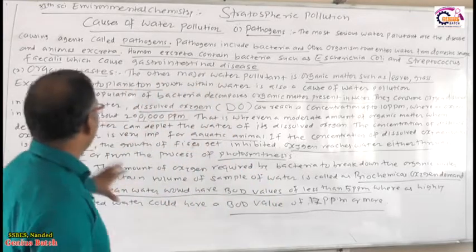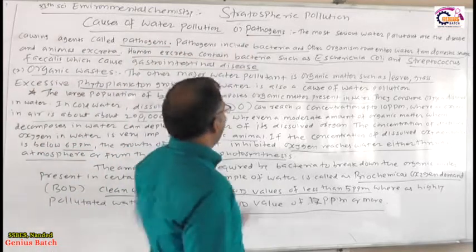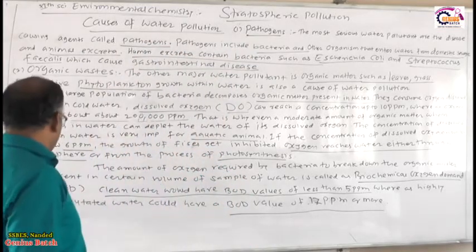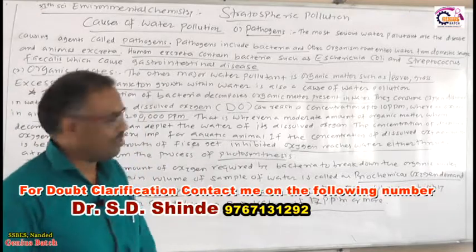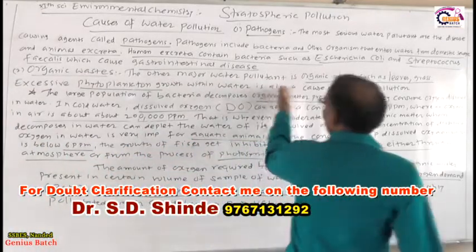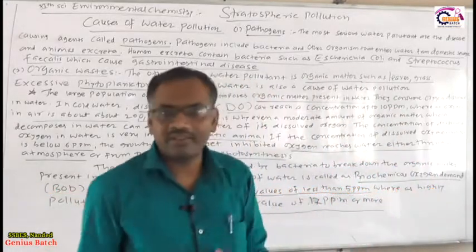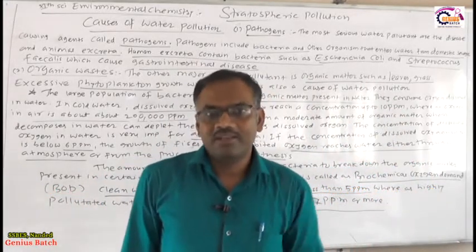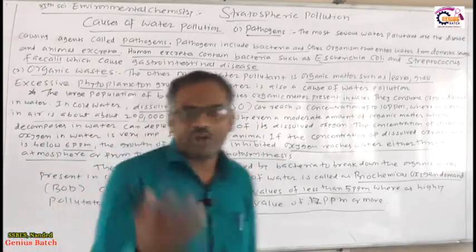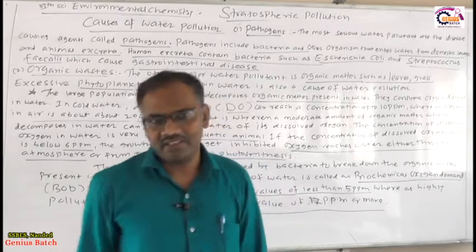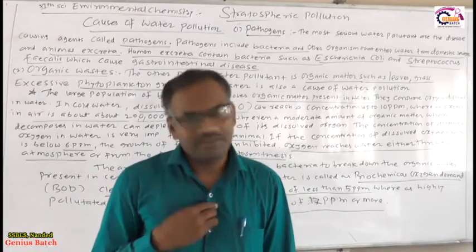This covers the causes of water pollution — pathogens and organic waste. Organic waste includes leaves, grass, and other organic matter. We will see soil pollution in the next video. Thank you.